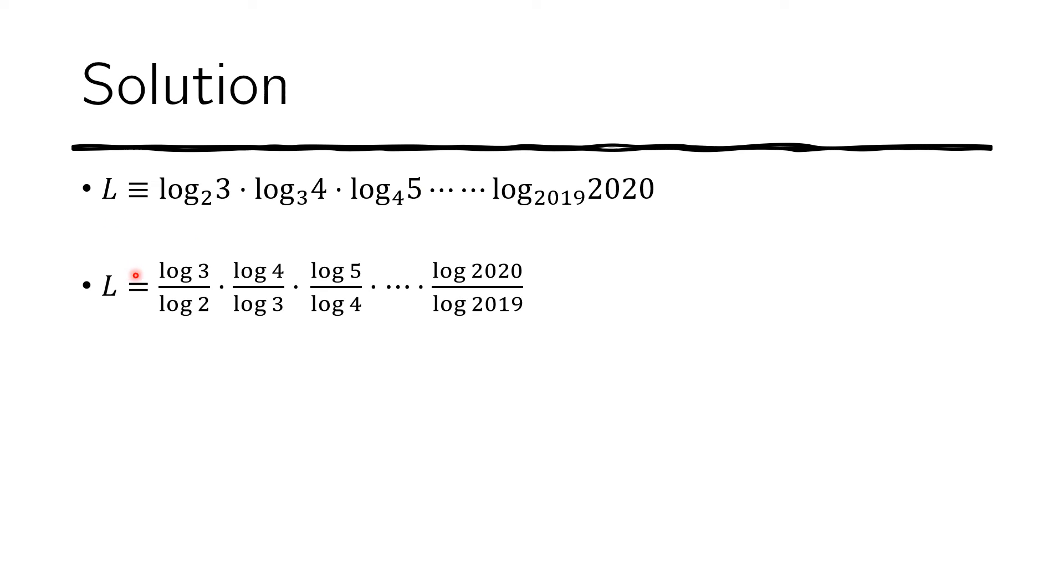Now let's use the identity that we've learned in the previous slide to actually solve the problem. We begin by defining the given as the number L. So this is just for convenience. Now, if we use the identity, we can expand these terms, the individual terms, and we get the following. Log of 3 base 2 now becomes this fraction log of 3 divided by log of 2.